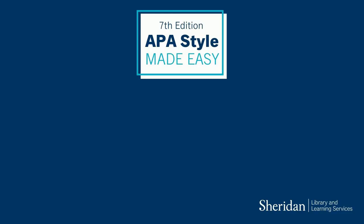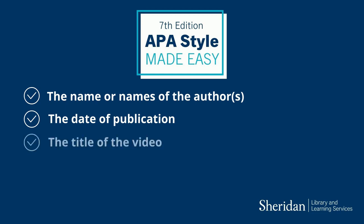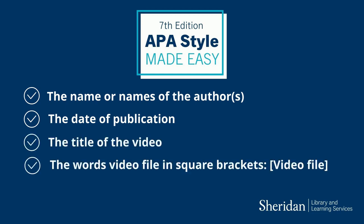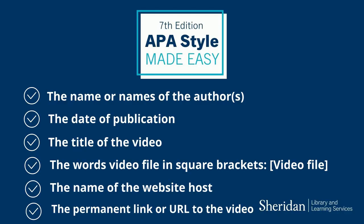To cite a video you found on a sharing site or a library database, you will need the name or names of the authors, the date of publication, the title of the video, the words 'video file' in square brackets, the name of the website host, and the permanent link or URL to the video.